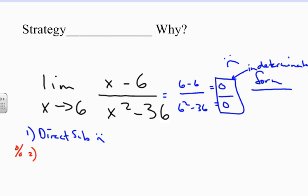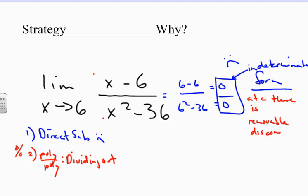So the strategy we're going to use, since we have a polynomial over another polynomial, when you have a poly over a poly, what we're going to try is basically the divide out technique, dividing out. Because normally when we have zero with zero indeterminate form, what that means is that at C, there is removable discontinuity. That's a big word. Removable discontinuity, for all intents and purposes, mean there's a hole in the graph.